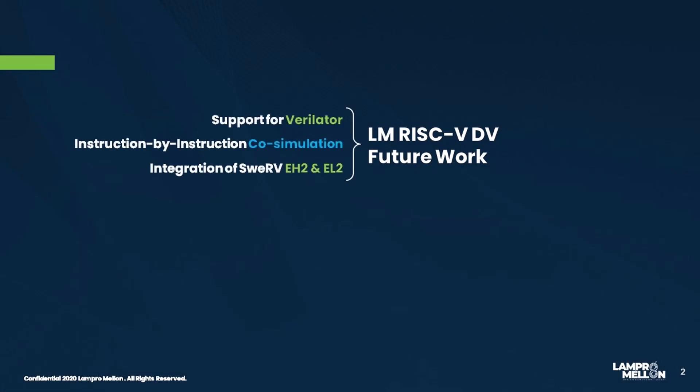So what are the future plans for LM RISC-V DV? Currently the tests are being generated from the SV/UVM-based source of RISC-V DV, which requires a simulator that has support for UVM. Good news is the RISC-V DV team is also porting the SV/UVM-based source into Python, so we plan to enable Verilator which can be used along with Python. At present we are doing post-simulation checking with Spike ISS; next we will enable instruction-by-instruction comparison during core simulation with Spike ISS. There are three SweRV cores — EH1, EH2, and EL2. We have integrated SweRV EH1 for now, and in the next phase we will integrate the remaining two.